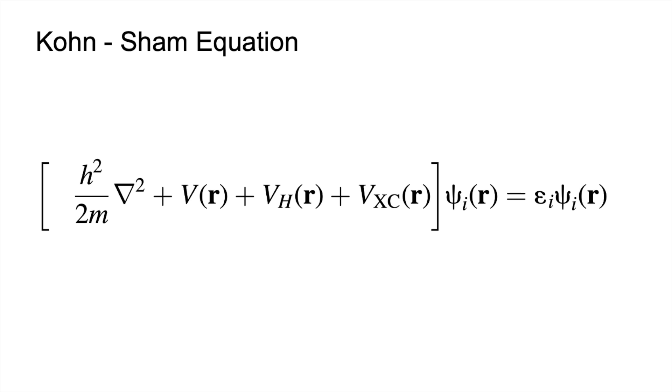Now let's look at the terms we have on the left-hand side of the equation. We have the electron velocity, followed by three different potentials. We have the electron and nuclei interaction.